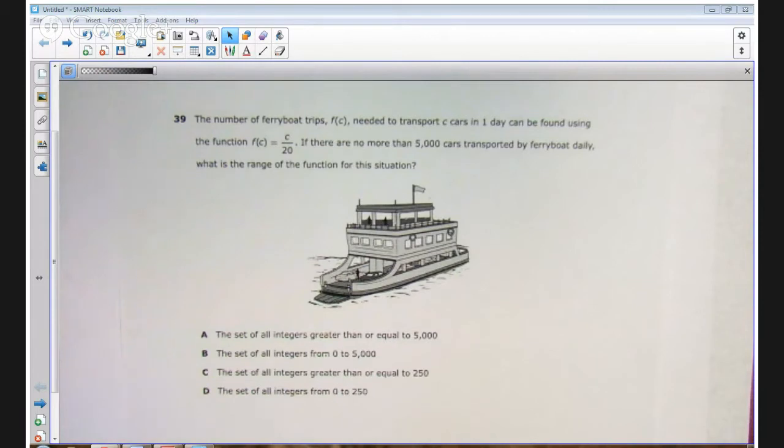The answer choices are A, the set of all integers greater than or equal to 5,000, B, the set of all integers from 0 to 5,000, C, the set of all integers greater than or equal to 250, and D, the set of all integers from 0 to 250.